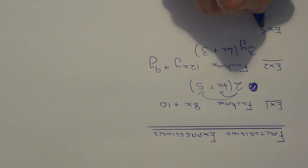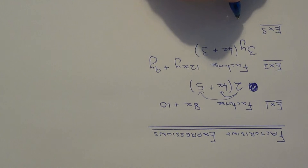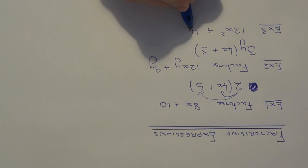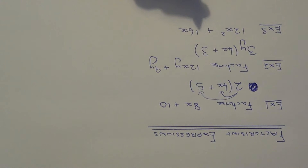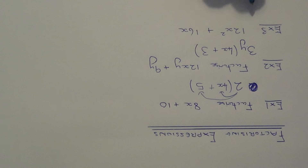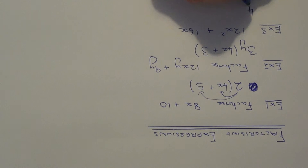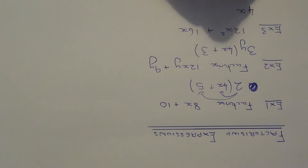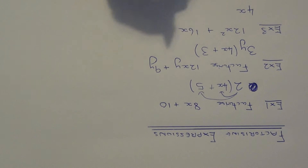Example 3: let's factorise 12x squared plus 16x. Again, look at both terms and take out the highest common factor. The highest common factor of 12 and 16 is 4, so this can go at the start of the bracket. Also, in both terms we have an x. Nothing else to take out now.